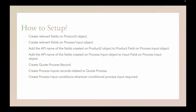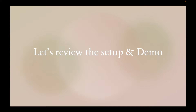To set up guided selling, we need to create relevant fields on the Product object, and create the same relevant fields on the Process Input object. Then add the API name of those fields created on the Product object to the Product Field on the Process Input object. Also add the API name of the field created on the Process Input object to the Input Field on the Process Input object. Then create a CPQ Process record, create Process Input records related to that CPQ Process for each question to be asked, and if we have any conditional questions, create Process Input Conditions wherever required.